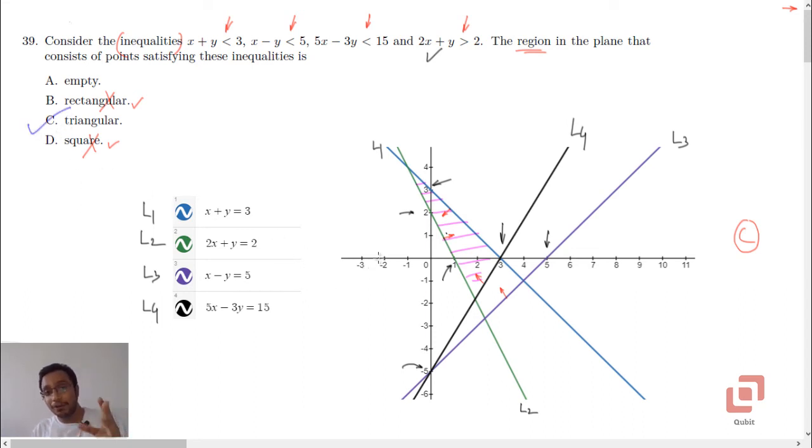And now when the diagram is in front of you, you can say that the point 2, 0 here satisfies all four constraints. 2 plus 0 is less than 3, then 2 minus 0 is less than 5, 5 into 2 minus 3 into 0 is less than 15, and 2 into 2 plus 0 is greater than 2. So definitely it's not empty because the point 2, 0 falls in the region. Now what I'm saying is if you pick the point 2, 0 as your first guess to check whether it satisfies all four inequalities, it will hardly take half a minute to solve the problem.